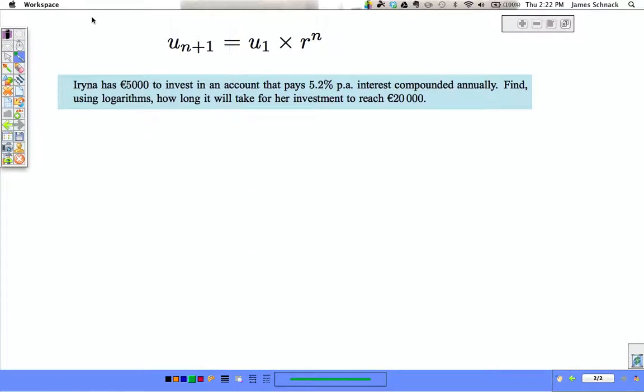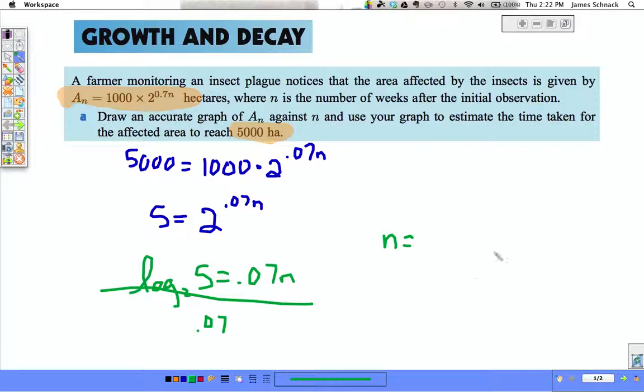So 6.15. And it's the number of weeks. So sometime in the sixth week, we'll have this insect flag across the graph. Way easier than having to use your graph. You've got to be able to find an intersection or guess just based on a graph.